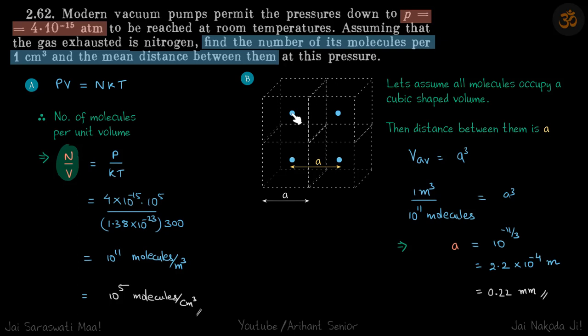Every molecule will occupy an average volume of one cube. We need to find this distance between the two molecules, which is A, the side of the cube. We're going to use the unitary method.